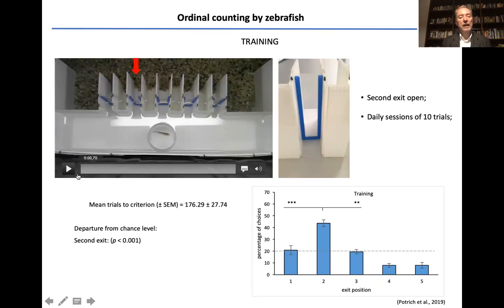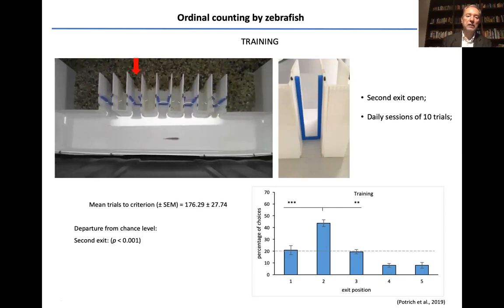These are males, and they have to select a particular door on the basis of the ordinal position. So for instance the second from the left, or if you prefer the fourth from the right. And you can see here an example. This is a zebrafish which has been successfully trained to choose the second one, which is marked by the red arrow.